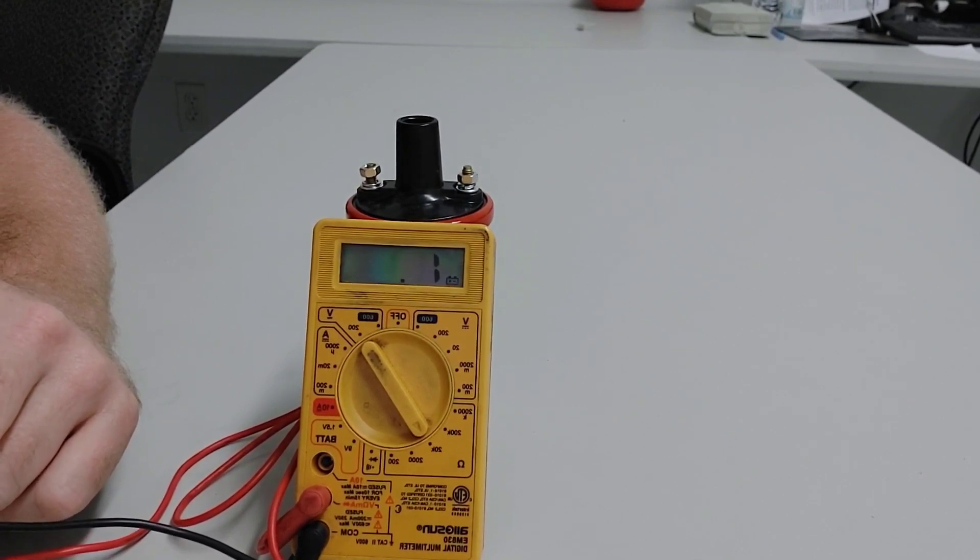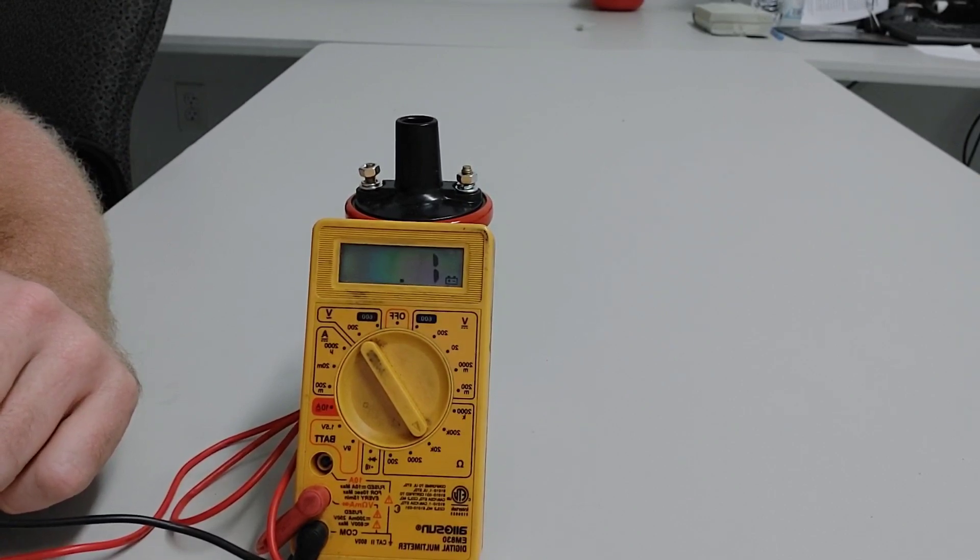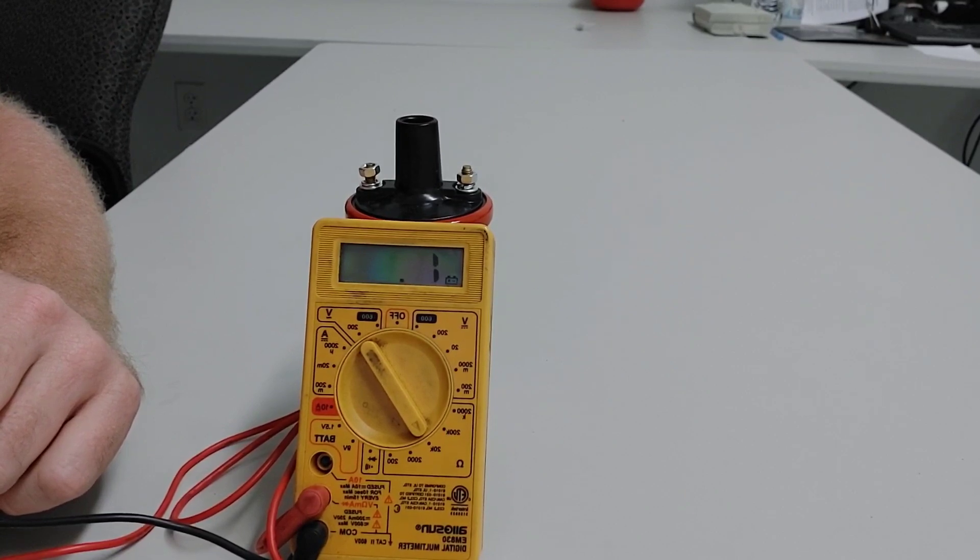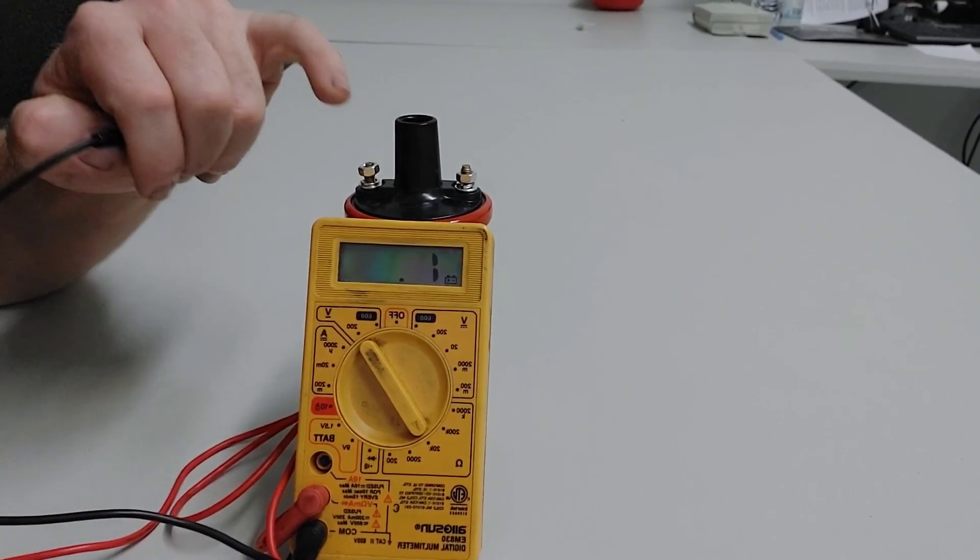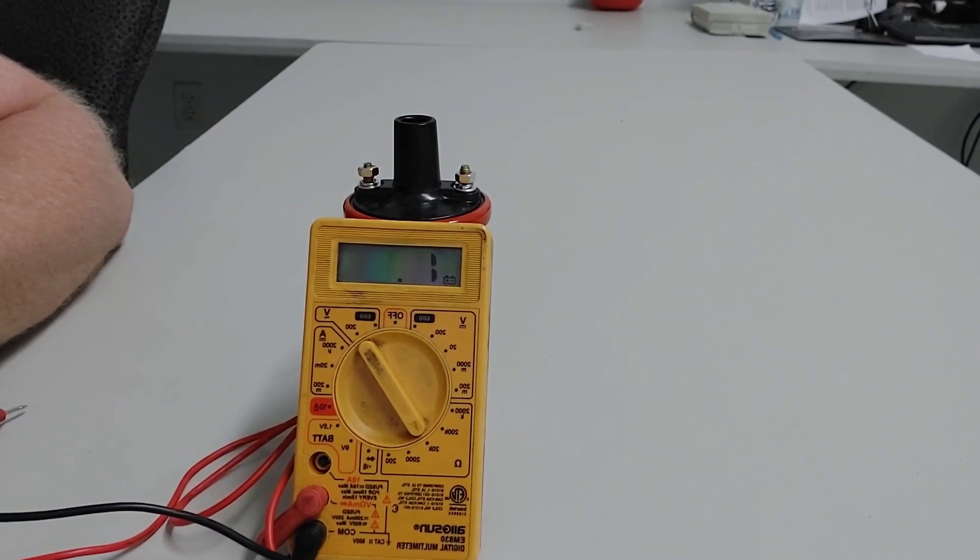If you don't know which wire is the hot wire on a new coil, you can turn your key to the on position without starting it, and whichever one's hot would be the positive terminal on top of the coil. Not all coils are labeled as simply as this one is with positive and negative on the top.